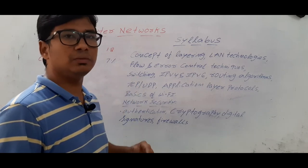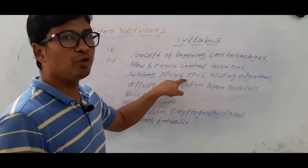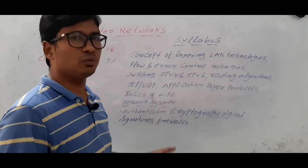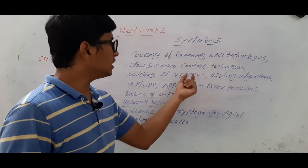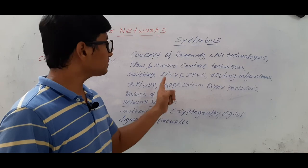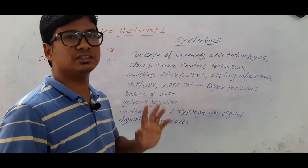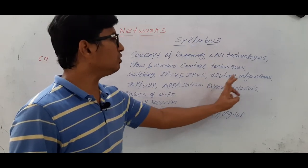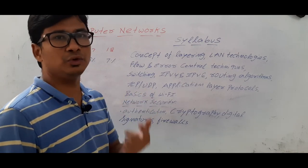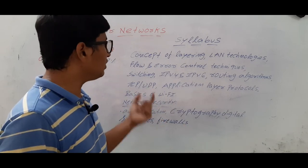Then I will discuss the importance of switching and what switching is. One very important concept is IPv4 — Internet Protocol version 4 — and then IPv6. I will discuss why people moved from version 4 to version 6, and cover all the frame structures. We will also discuss various routing algorithms, and the TCP and UDP protocols used in the transport layer. These are very important concepts.